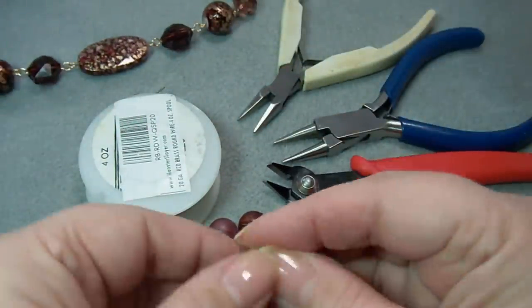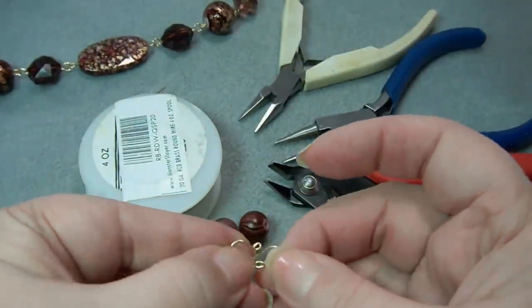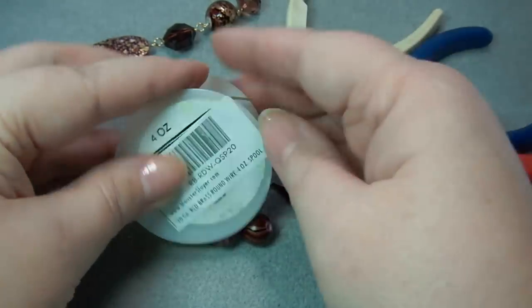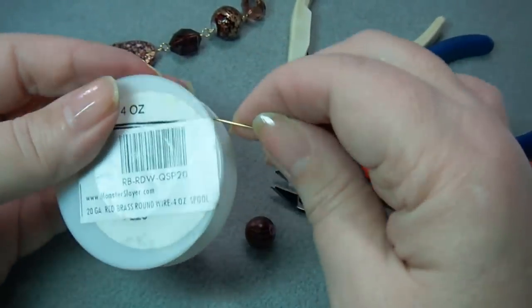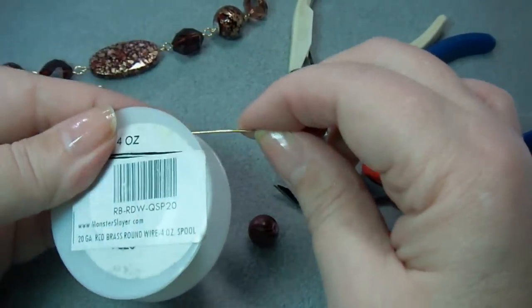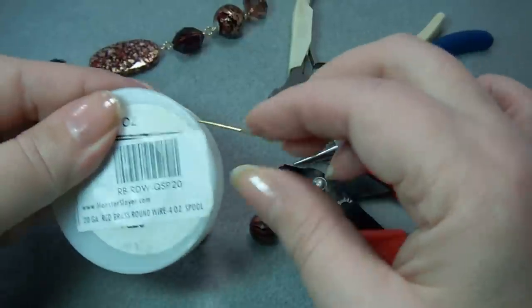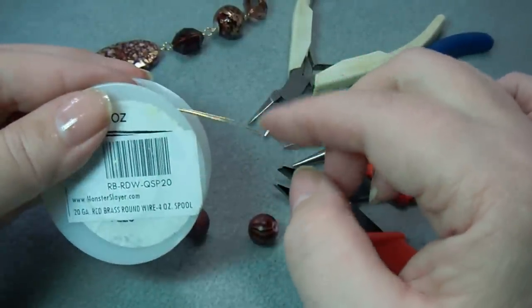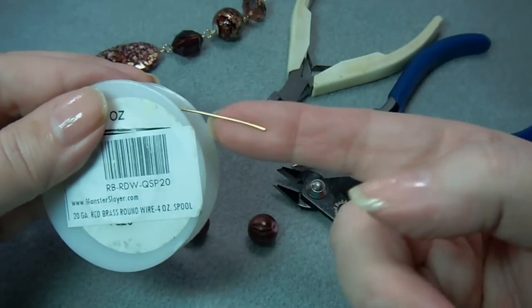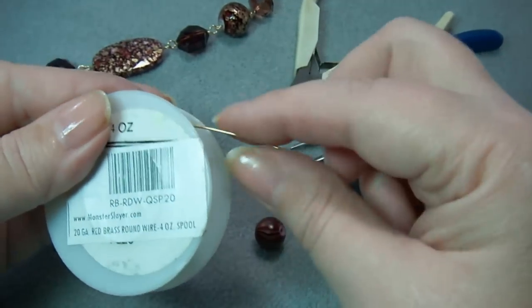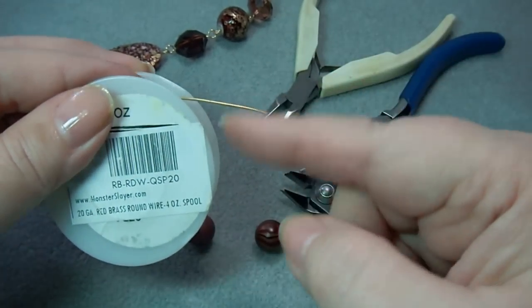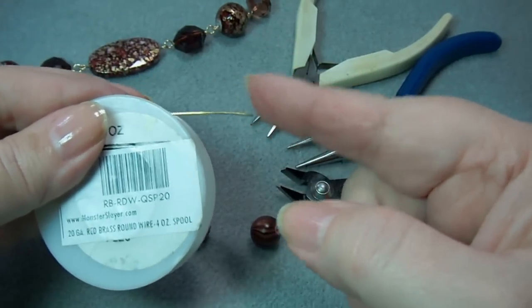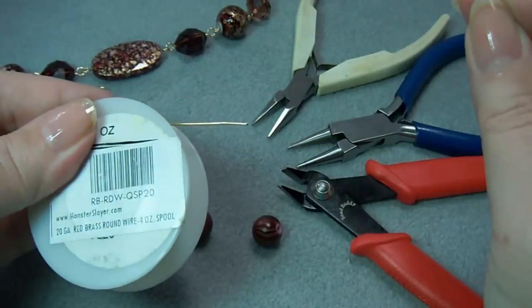You will need a clasp—I have a simple S clasp here. You will need some wire. I am using 20 gauge red brass. You don't want to go any smaller gauge than 20 gauge. You don't want to go 22 or anything like that because it won't be stable enough. You could go to 18 gauge if your beads have a big enough hole.